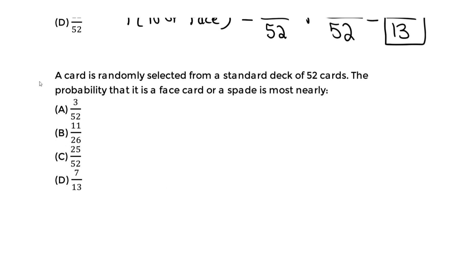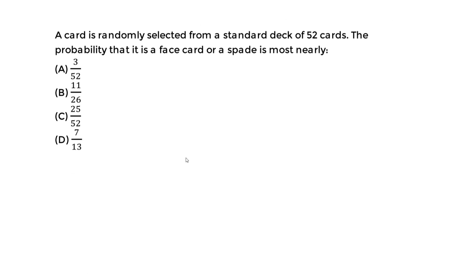For the second question, a card is randomly selected from a standard deck of 52 cards. The probability that it's a face card or a spade is most nearly what? We're going to say this is a non-mutually exclusive event. We take the probability of the face card, add it to the probability of getting a spade, then subtract the probability of getting both a face card and a spade.